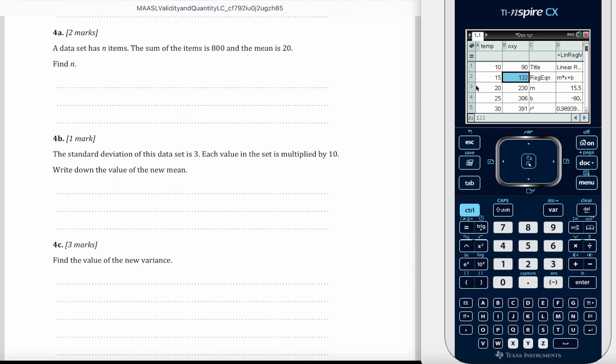So we'll assume that the data set is a sample. So x bar is equal to 20 and that is equal to 800 divided by the number of pieces of data that we have.